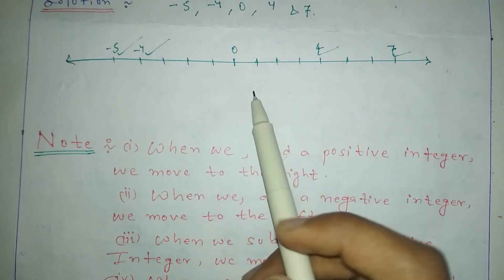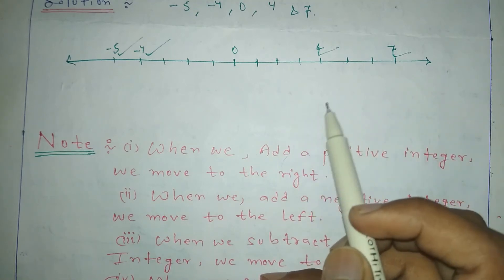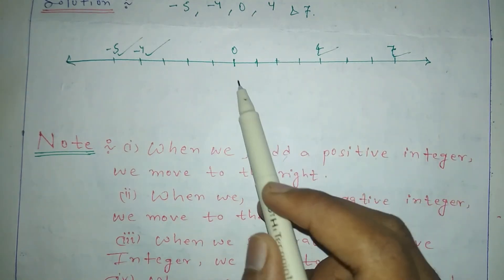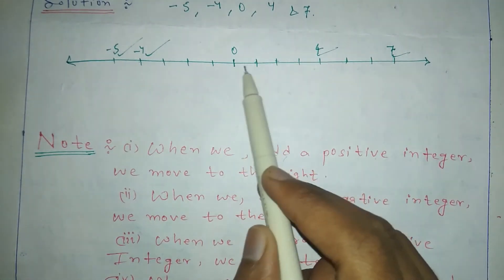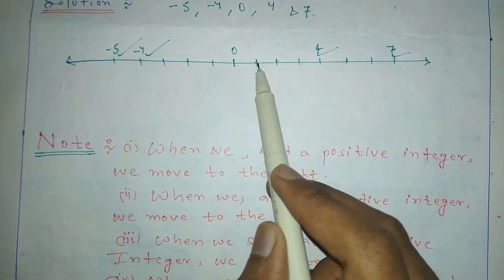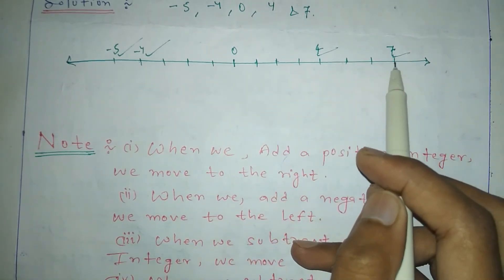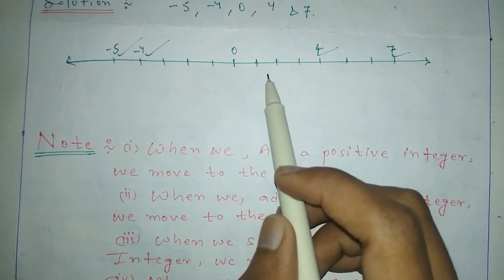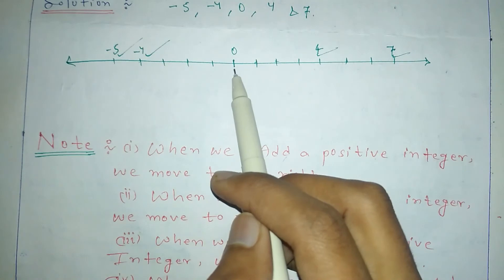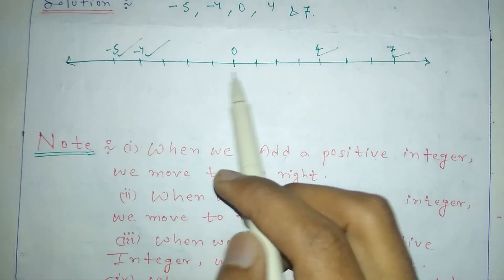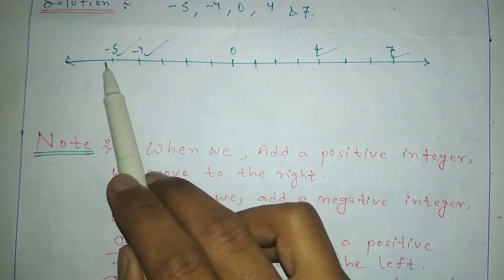When we add a positive number or integer, we move right on the number line — as we can see, after 0, values like 4 and 7 are to the right. Similarly, when we subtract any integer or number, we move left on the number line, toward -4 and -5.